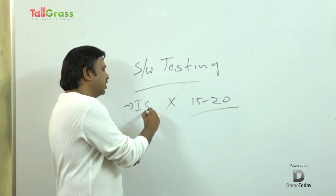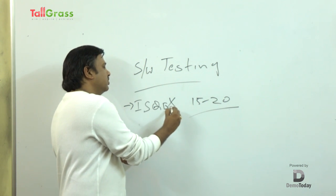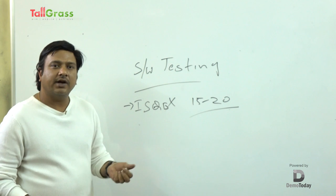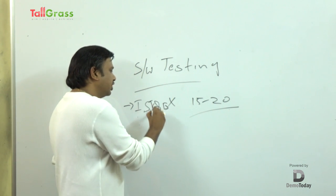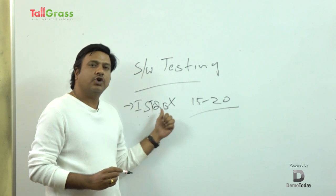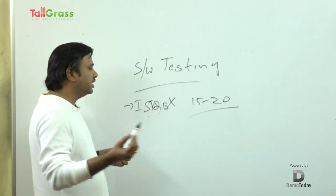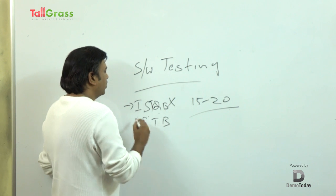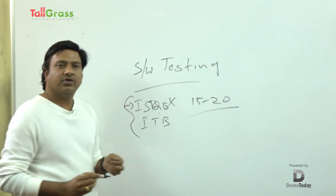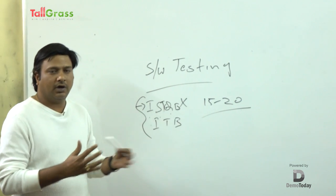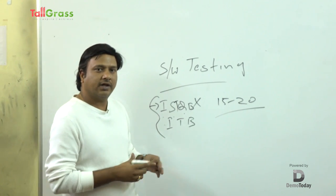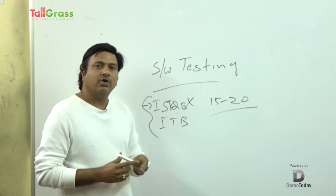We start with ISTQB, which stands for International Software Testing Qualification Board, and it is certified by the Indian Testing Board. It contains around six chapters that you need to go through in this certified course we are teaching at TallGrass.